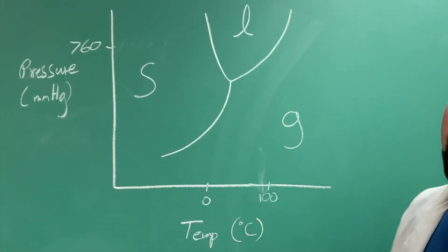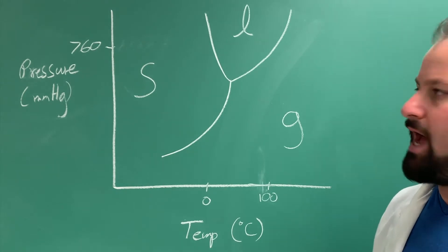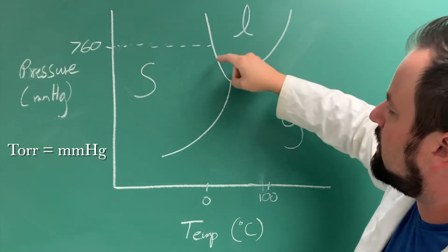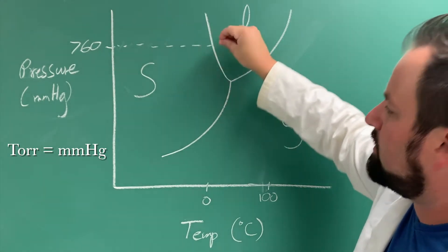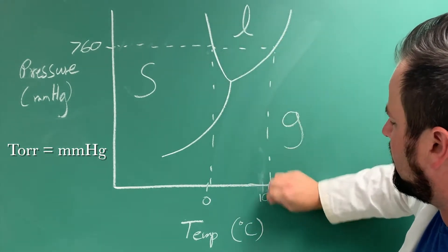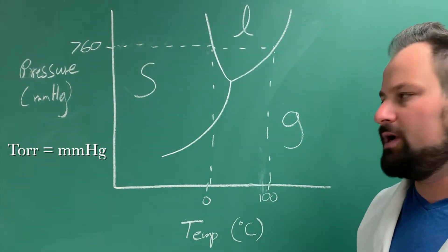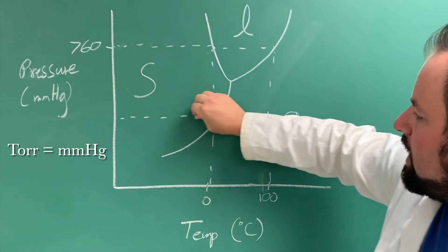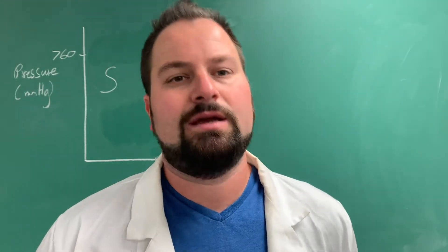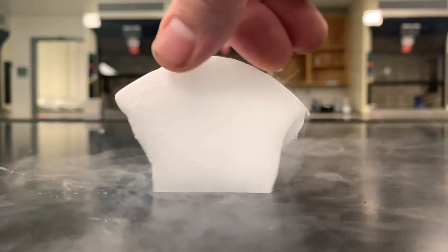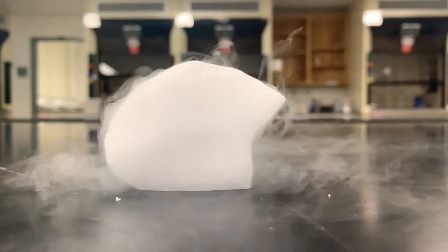Now this is a phase diagram for water, and water doesn't undergo sublimation at atmospheric pressure — 760 torr. At 760 torr, it crosses between solid and liquid at zero degrees C, and between liquid and gas at 100 degrees C. However, if you lower the pressure, you could sublimate. There are some things that will sublimate at room temperature, the quintessential of which is carbon dioxide, also known as dry ice. You can see here as the gases are coming off of the solid block.